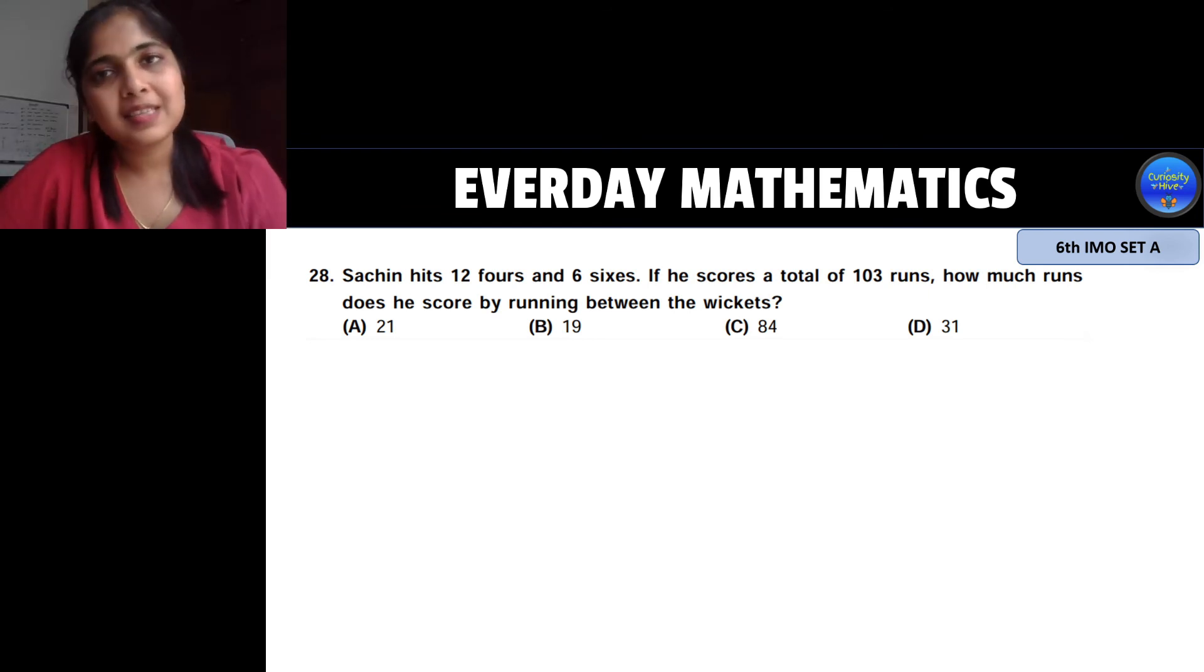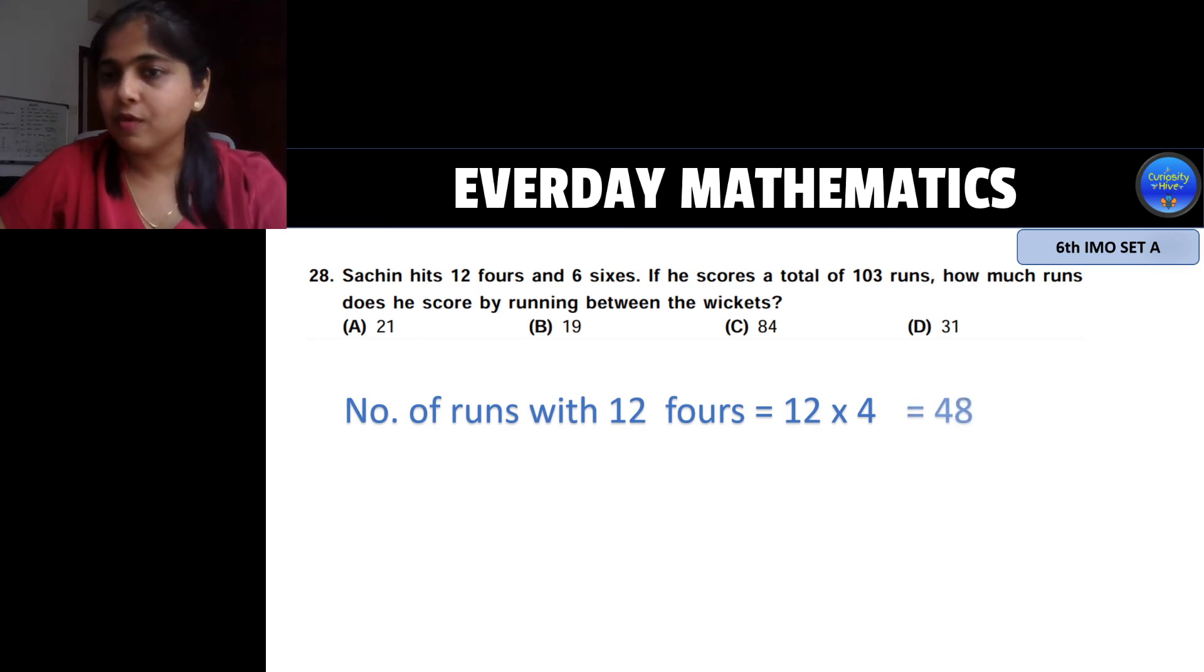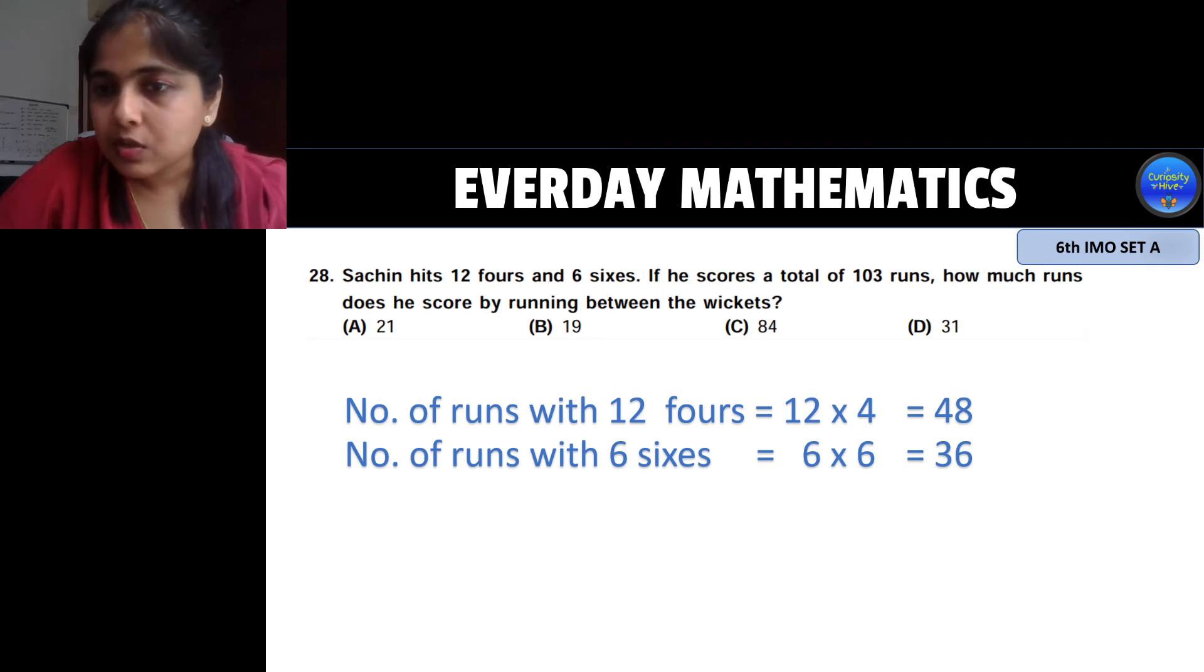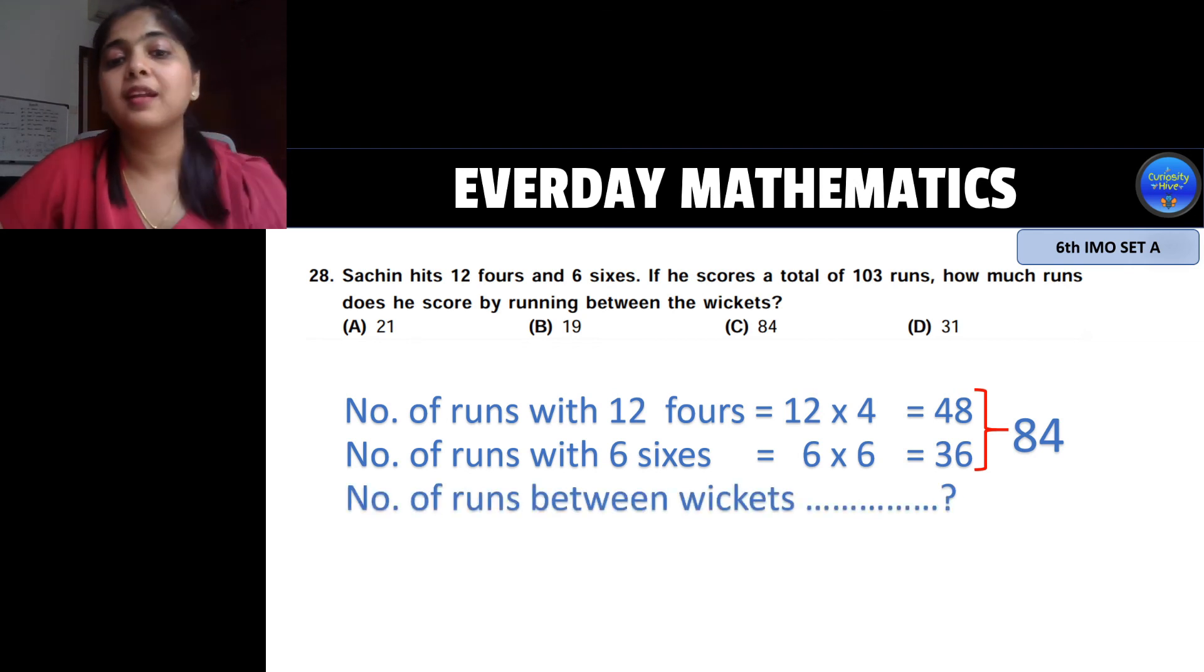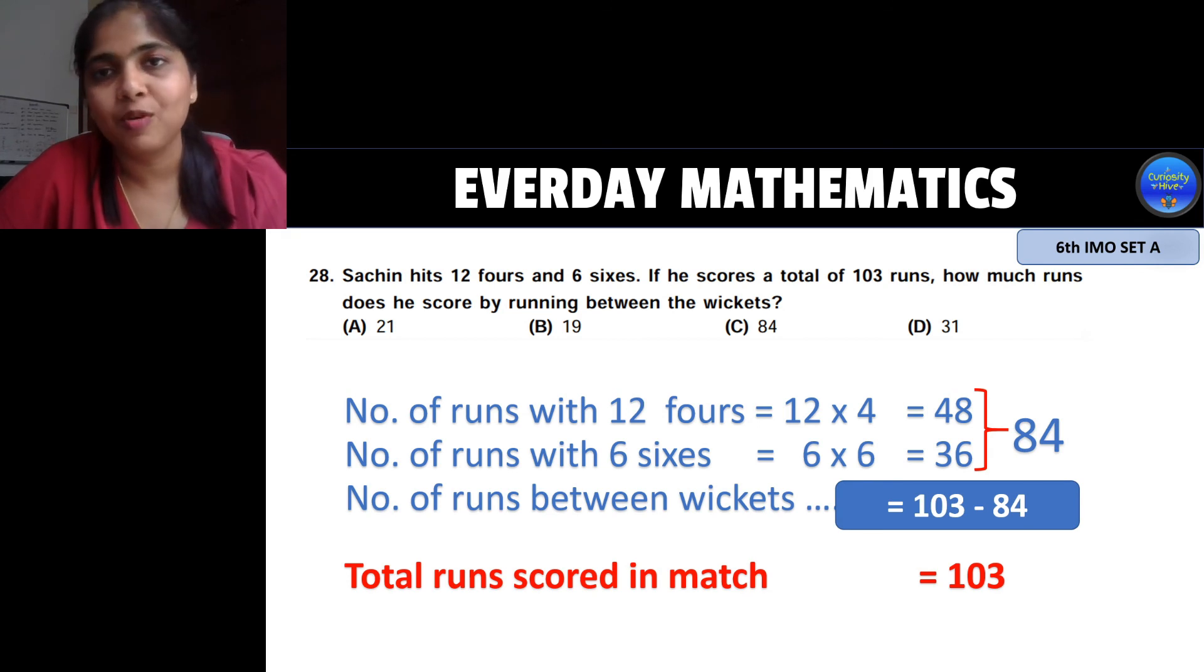Now let's head to the last and final question in this section. Well let's solve this again in a stepped format. So Sachin hits 12 fours and 6 sixes and the total score that he makes is 103 runs and they are asking us how much runs does he score by running between the wickets. So he has scored by hitting fours, by hitting sixes and by running between the wickets total of which is 103. So this runs scored by hitting 12 fours will be 12 times 4 which is 48 and runs hit by 6 sixes will be 6 times 6 which is 36. So the sum of the scores by hitting boundaries is 84 which is the sum of these two numbers. Now he also has made runs by running between wickets which we don't know but the total of all of these runs is 103. So number of runs by running between wickets would be the total minus 84 which is the runs he scored by hitting boundaries which will give you the answer to be 19.